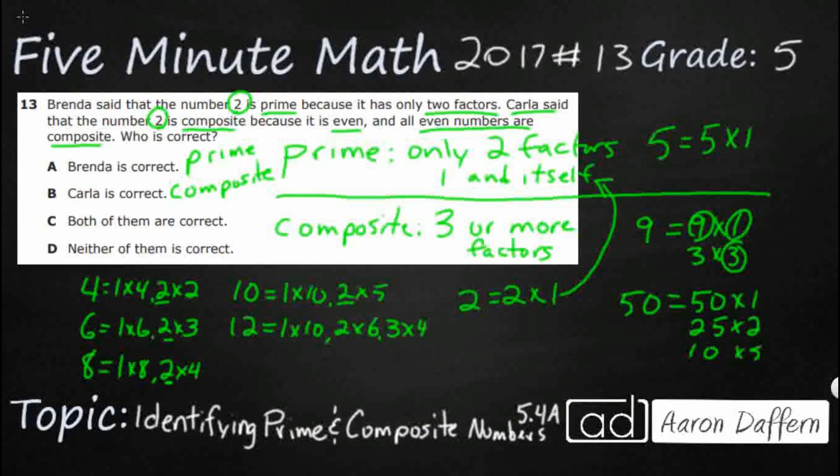So, all even numbers are composite because they have 2 except, put that in capitals there, except the very first even number, 2.